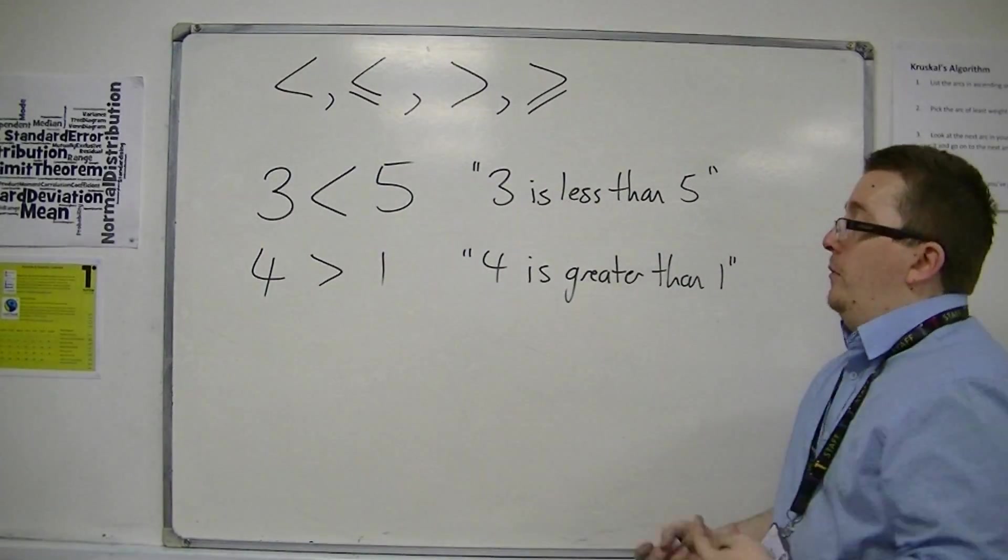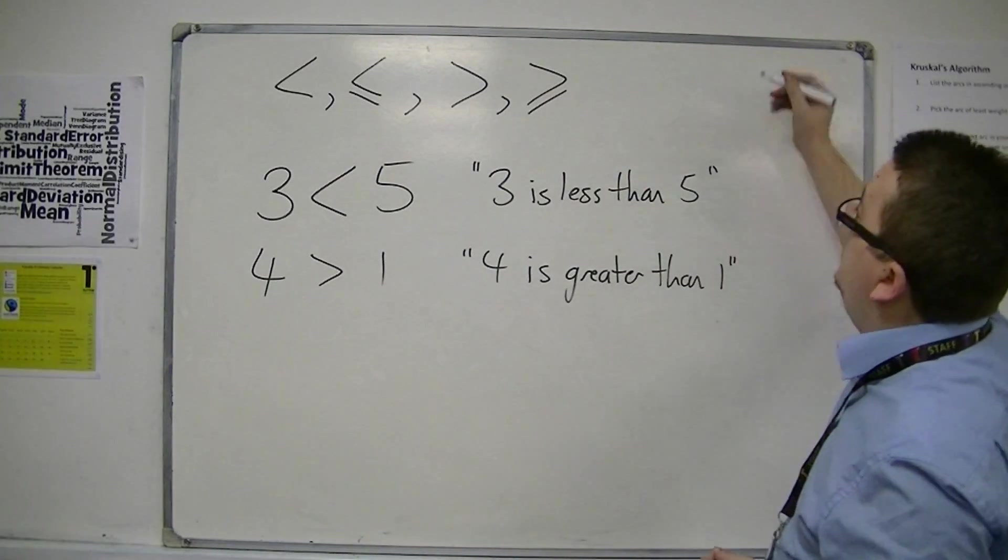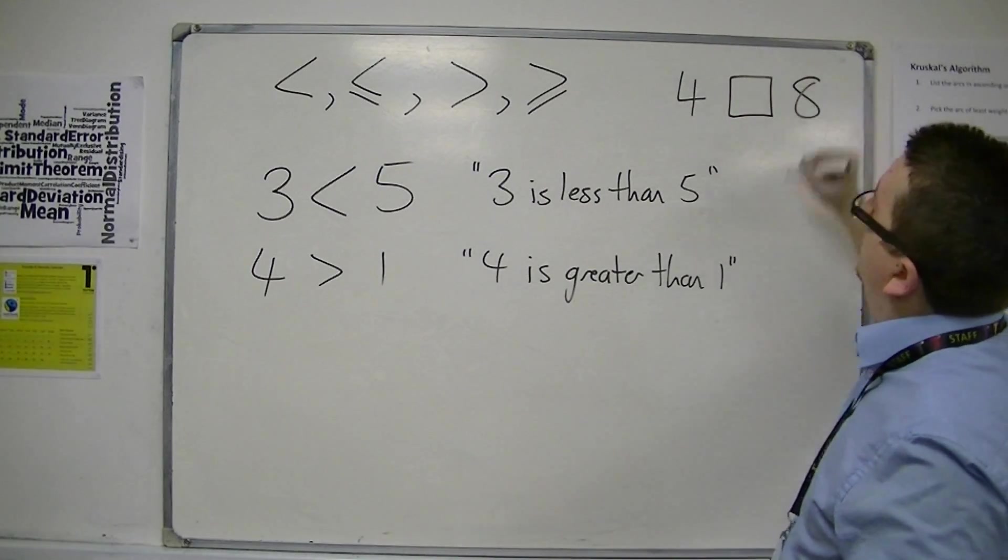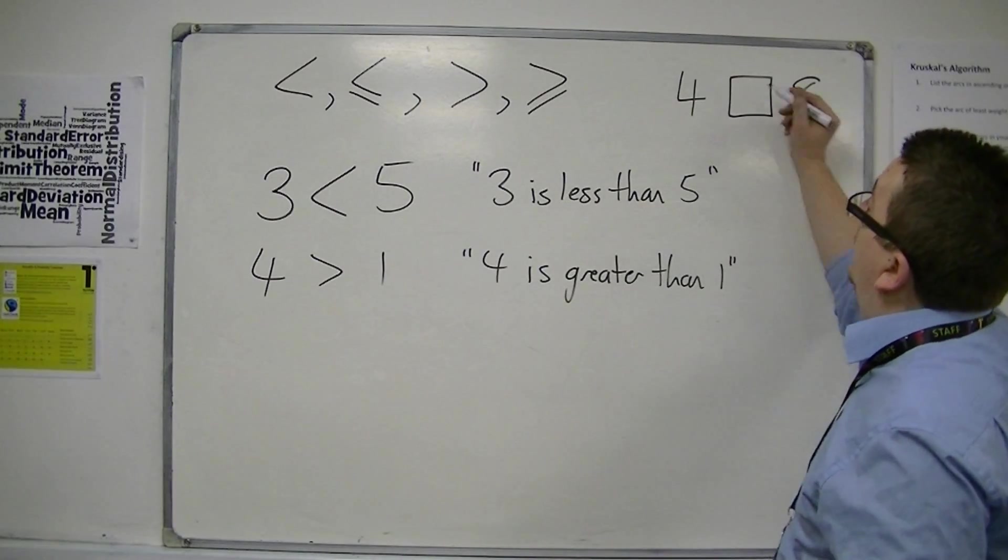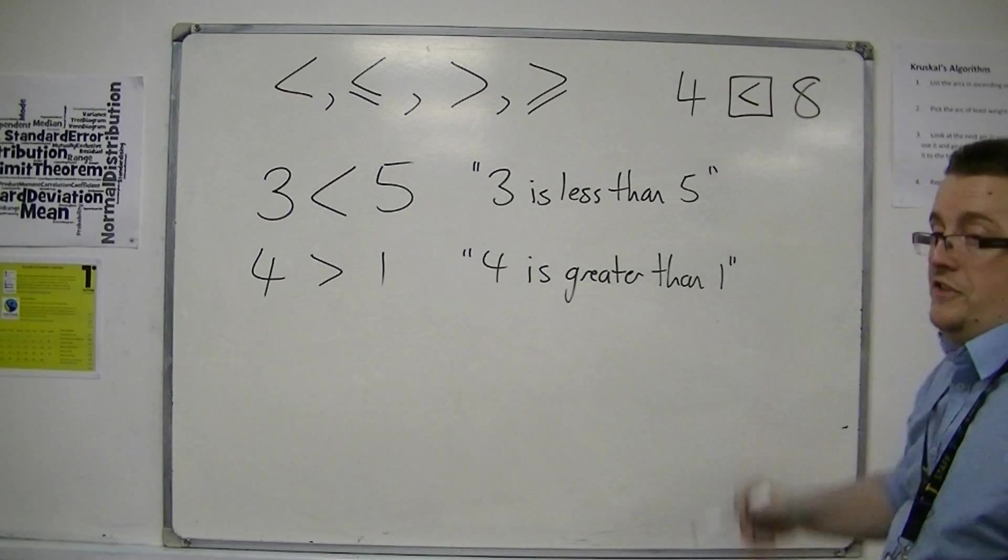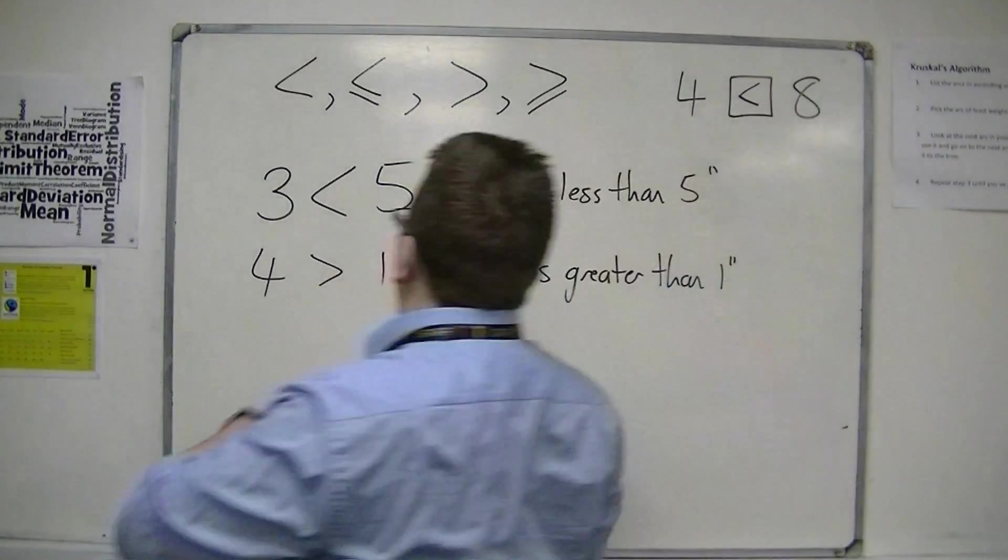So you might be asked to put inequality symbols into something like this, making sure that you get the inequality symbol the right way round, and be able to say, well, four is less than eight, and have the mouth pointing towards the larger number. So that's two of them.